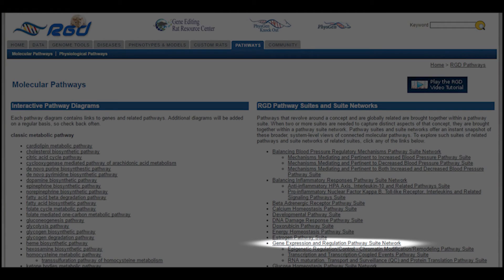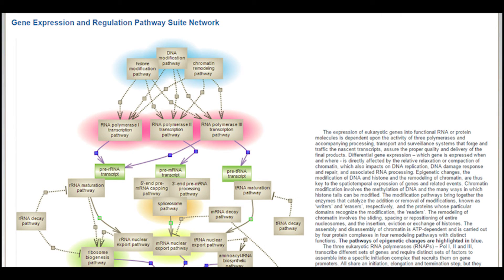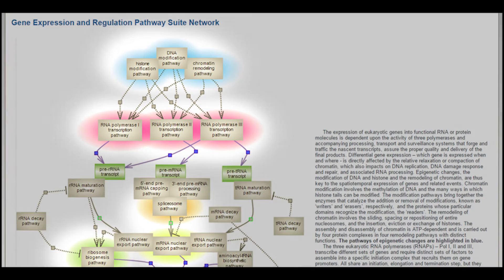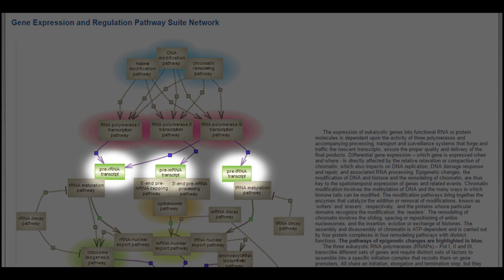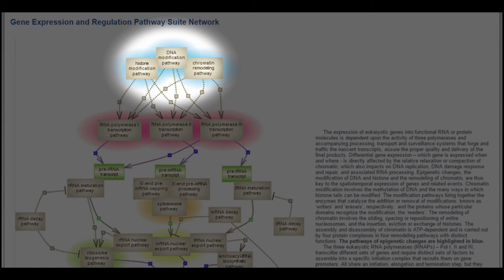Clicking on the gene expression and regulation pathway suite network, you will see a diagram showing the pathways involved in the network. Individual pathways in the diagram are grouped into suites by the color coded background shading. Intermediaries that are outputted by one set of pathways and used as input for another set of pathways are shown as green shaded rectangles. Here you can see that histone modification pathway is part of the first suite in the network.